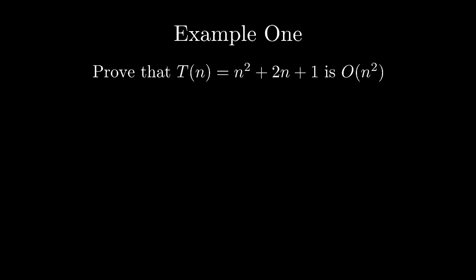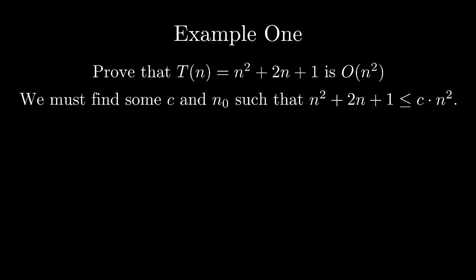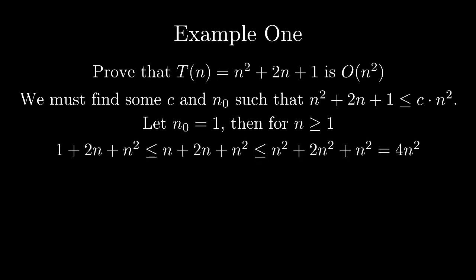Let's look at some example proofs using this formal definition of big O. Example 1: Prove that t of n equals n squared plus 2n plus 1 is big O of n squared. Now, by using the other steps, you can just see right away that the highest order term is n squared, but let's look at the proof. We must find some c and n₀ such that n squared plus 2n plus 1 is less than or equal to c times n squared. So, for the sake of the argument, let's assume n₀ is equal to 1 and then for all n greater than or equal to 1. 1 plus 2n plus n squared is less than or equal to n plus 2n plus n squared which is less than or equal to n squared plus 2n squared plus n squared and that's equal to 4n squared. Therefore, c is equal to 4 and n squared plus 2n plus 1 is equal to big O of n squared.